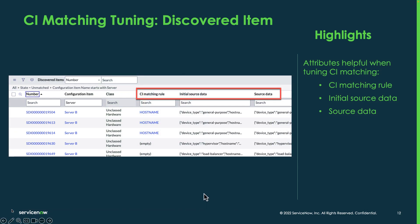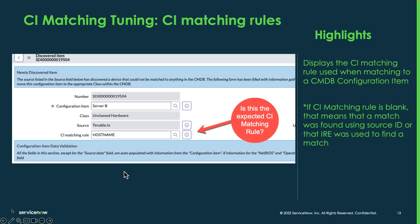When troubleshooting CI matching, there are some important data pieces. You can see CI matching rule, initial source data, and source data. Using these attributes, we can tell how things are working. The first is the CI matching rule — is this the right CI matching rule you would expect this CI to match against? If you saw an IP one here and that's not what you were expecting, you may need to change how your CI lookup rules are working.